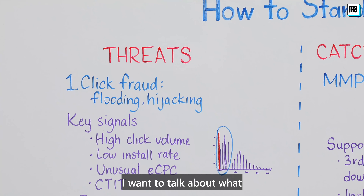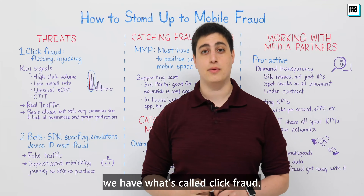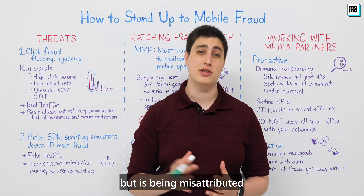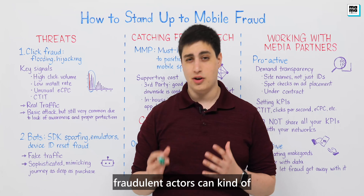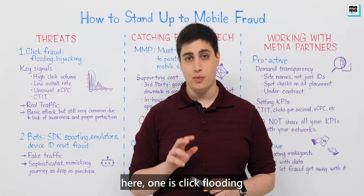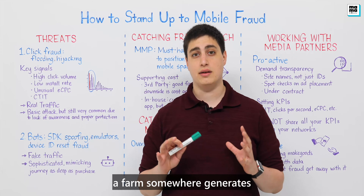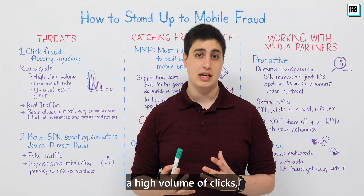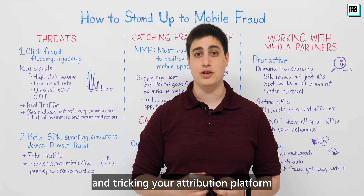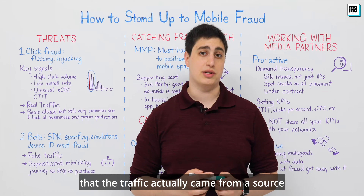At the very surface level, we have what's called click fraud. This is real traffic that's actually coming to your app organically, but is being misattributed. There are two main types: click flooding and click hijacking. Click flooding is when a farm somewhere generates a high volume of clicks meant to capture device IDs of people installing your app organically, tricking your attribution platform like AppsFlyer into thinking the traffic came from a source that doesn't exist.